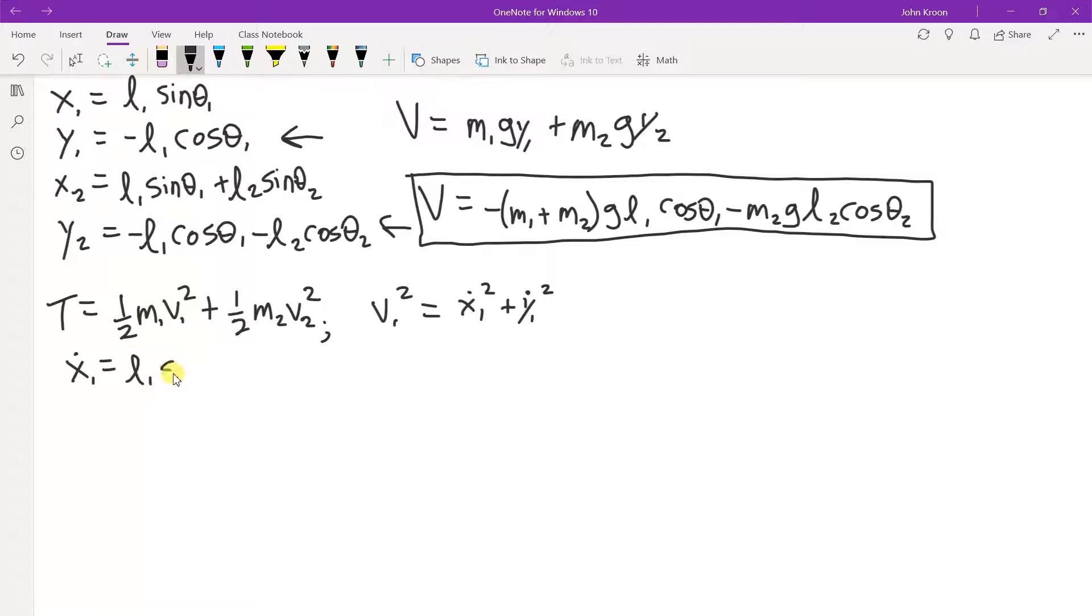So x dot, x1 dot, is L1. So what's the derivative of sine? Well, it's cosine. Cosine theta 1 times, remember the chain rule, times the derivative of theta 1 with respect to time, which is theta 1 dot.